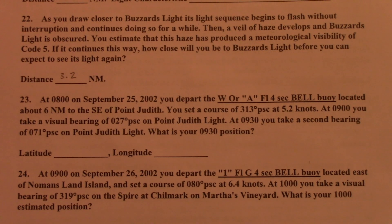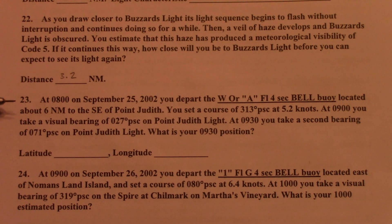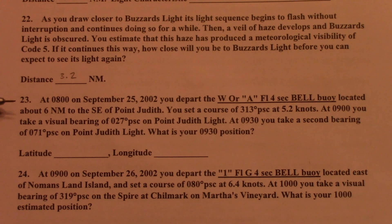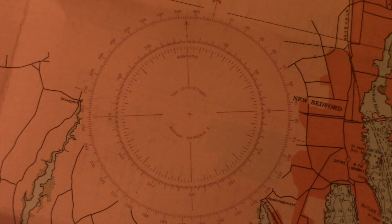Let's take a look at a word problem for navigation — this is going to be a running fix. We'll plot on chart number 23. At 0800 on September 25, 2002, you depart the W or A flashing four-second bell buoy located about six nautical miles to the southeast of Point Judith. You set a course of 313 degrees per ship's compass at 5.2 knots. At 0900 you take a visual bearing of 27 degrees per ship's compass on Point Judith light. At 0930 you take a second bearing of 71 degrees per ship's compass on Point Judith light. What is your 0930 position? We're looking for latitude and longitude.